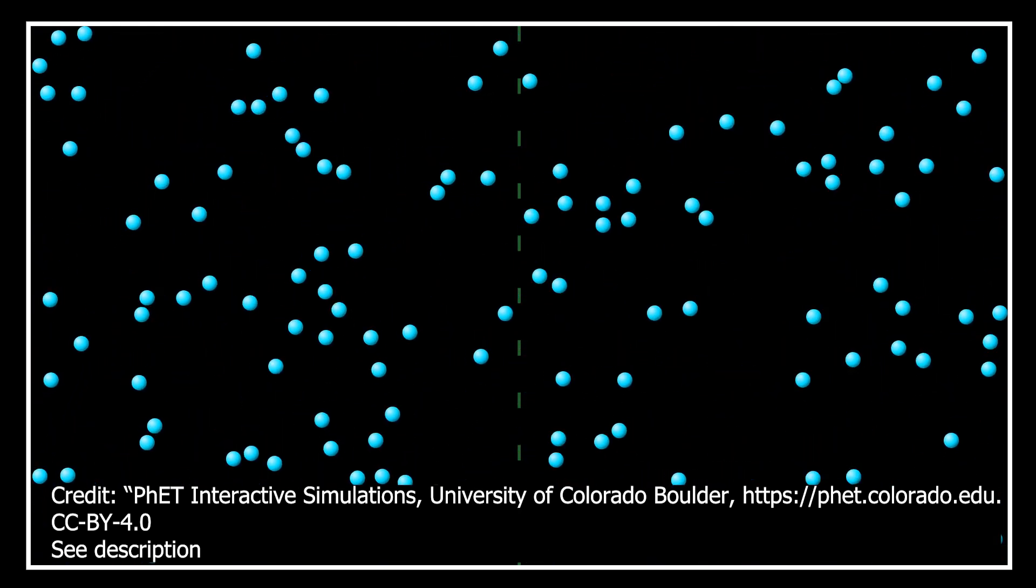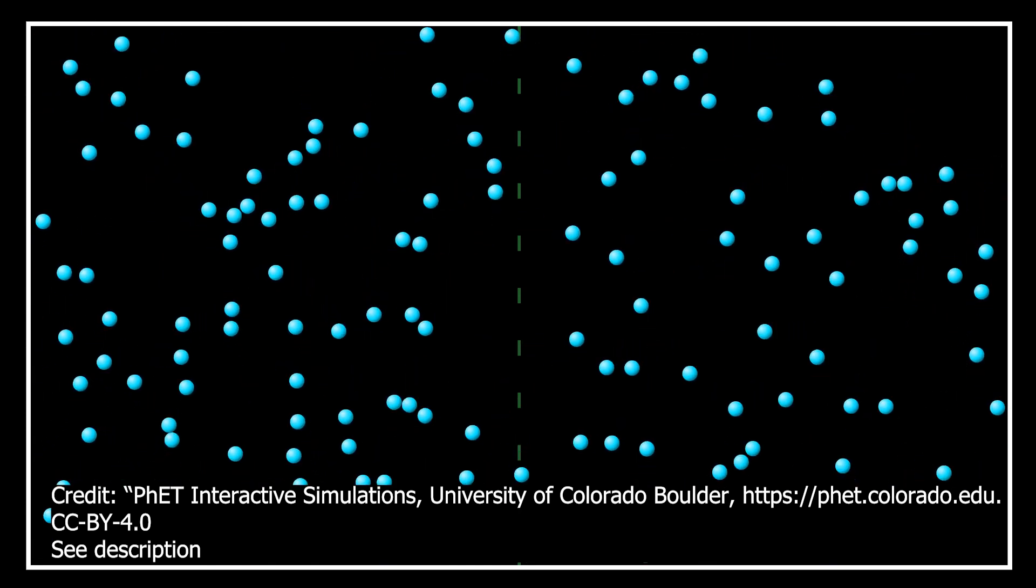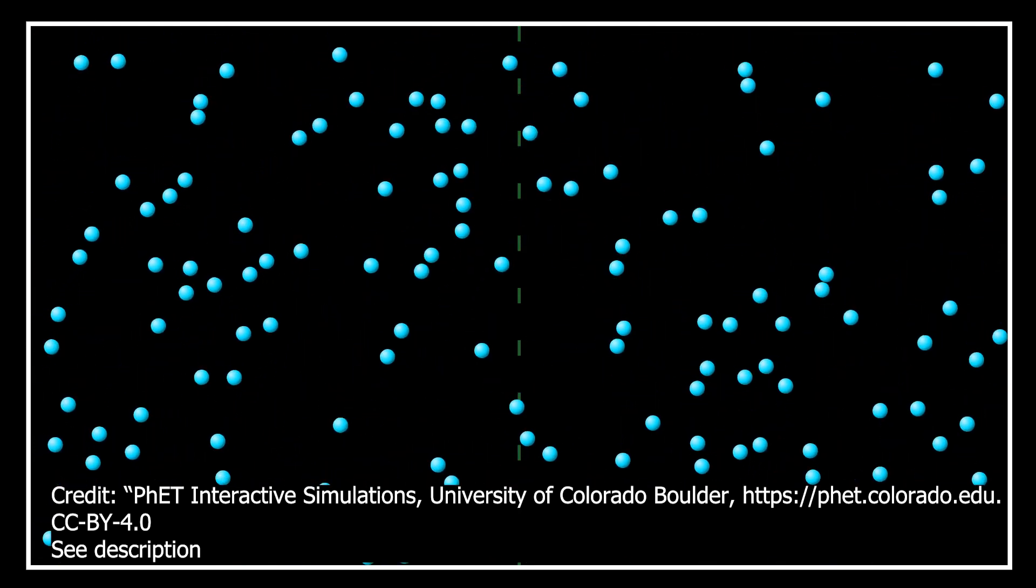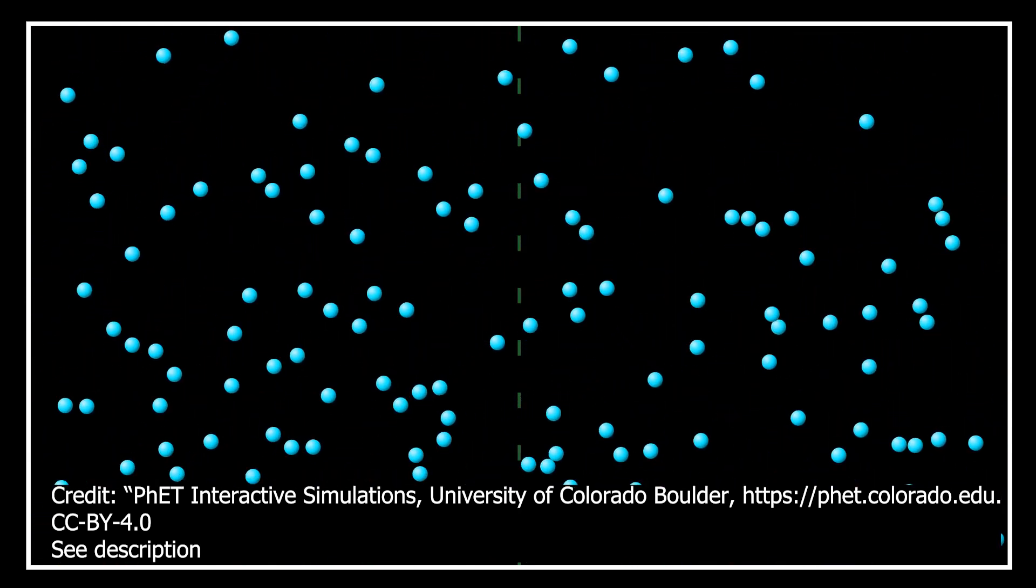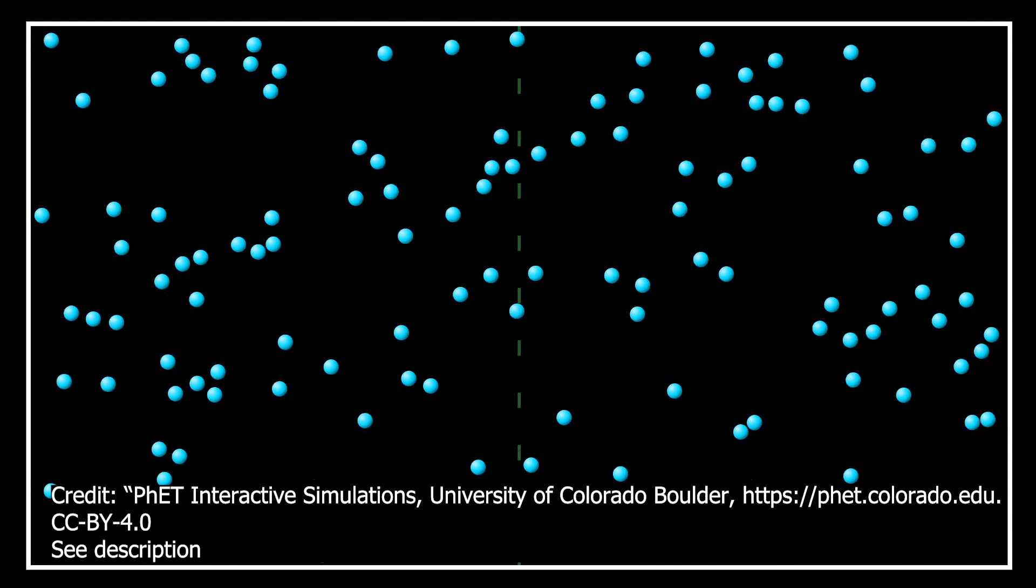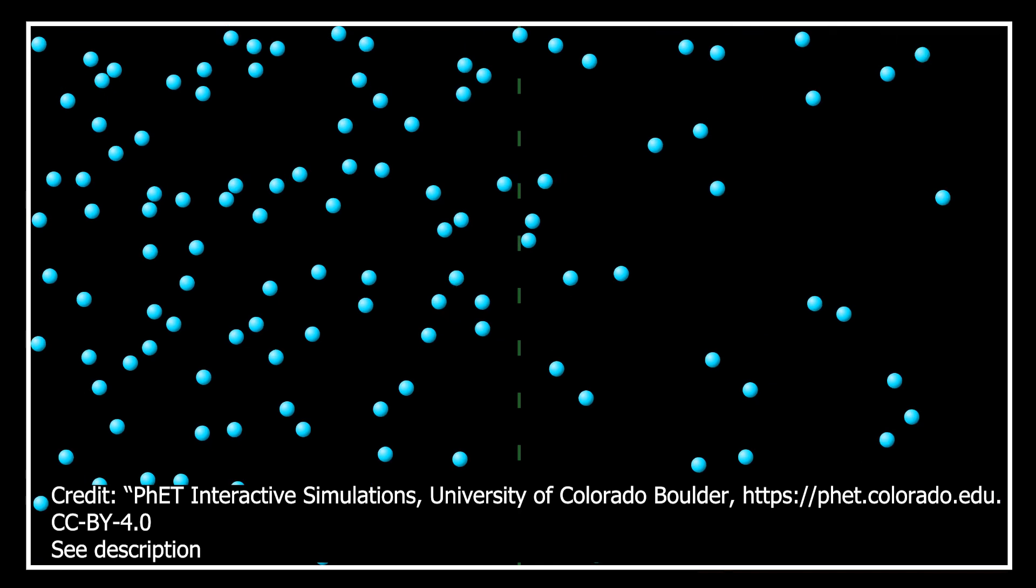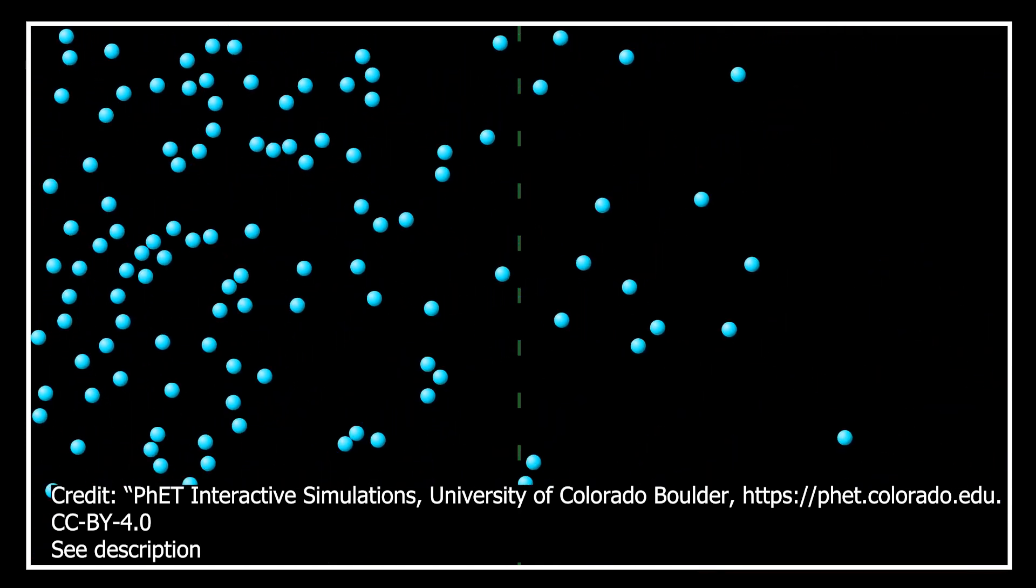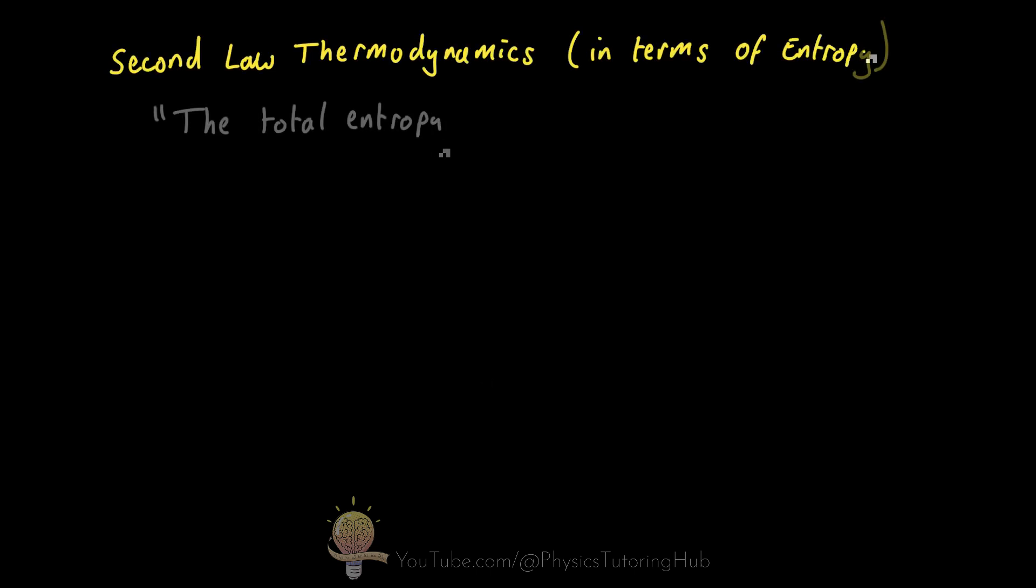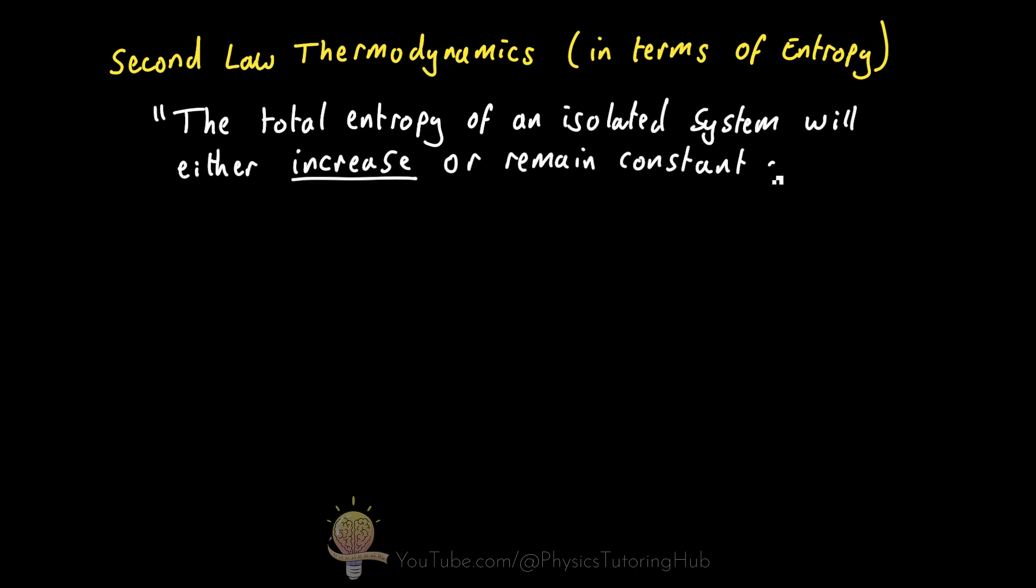Now, all these gas particles could randomly end up on one side of the container again. But the chances of this happening are astronomically minute because there are so many more ways to arrange themselves in this larger volume. So let's end this video with another definition of the second law of thermodynamics, which is the total entropy of an isolated system will either increase or remain constant over time, but it will never decrease.